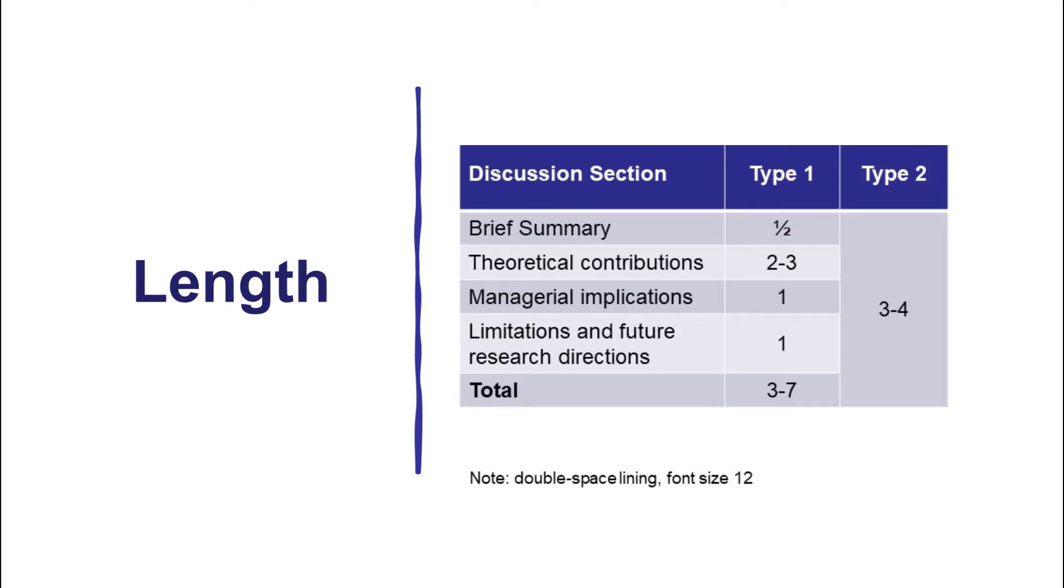The managerial implications, of course, are important. But for research papers in major journals, that's not so important. You may say, oh, that's a pity. Yeah, but that's the way it is. So, it can be brief. Maybe one page. And then the limitation, future research action, can be ultimately one page roughly, give or take.